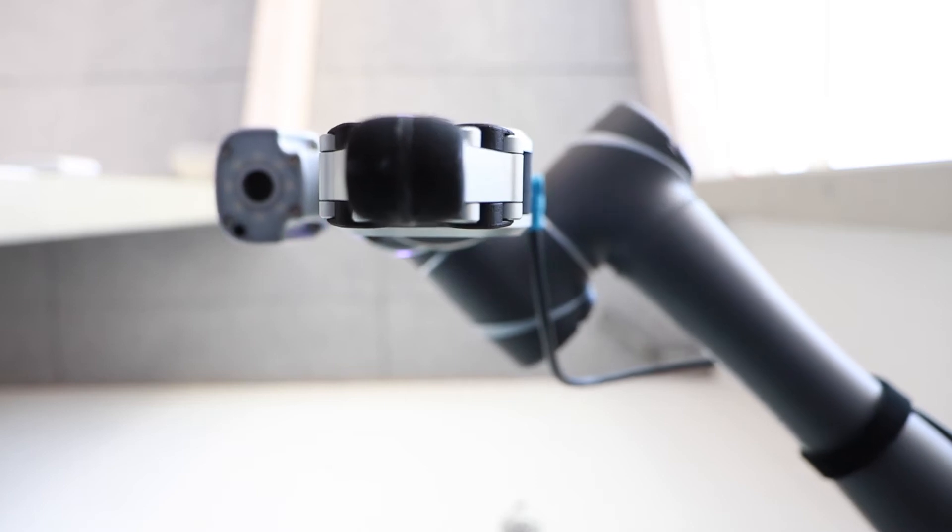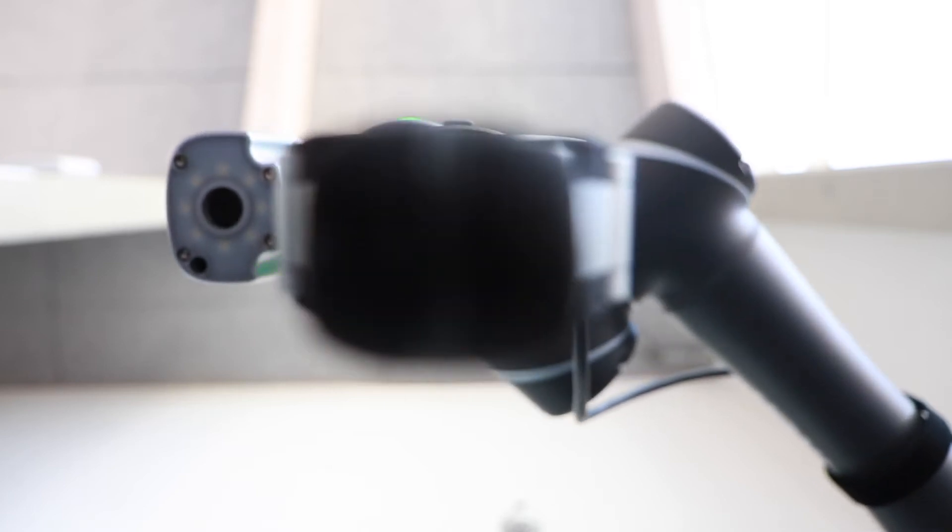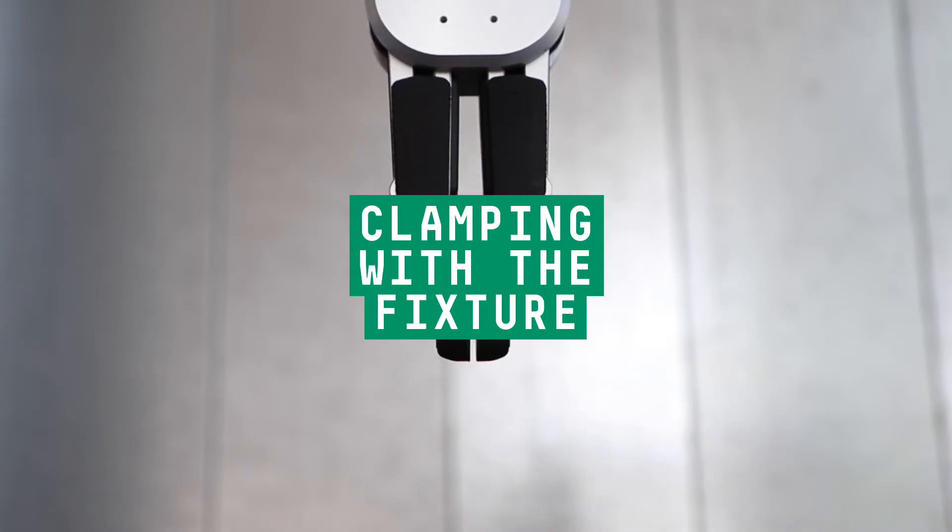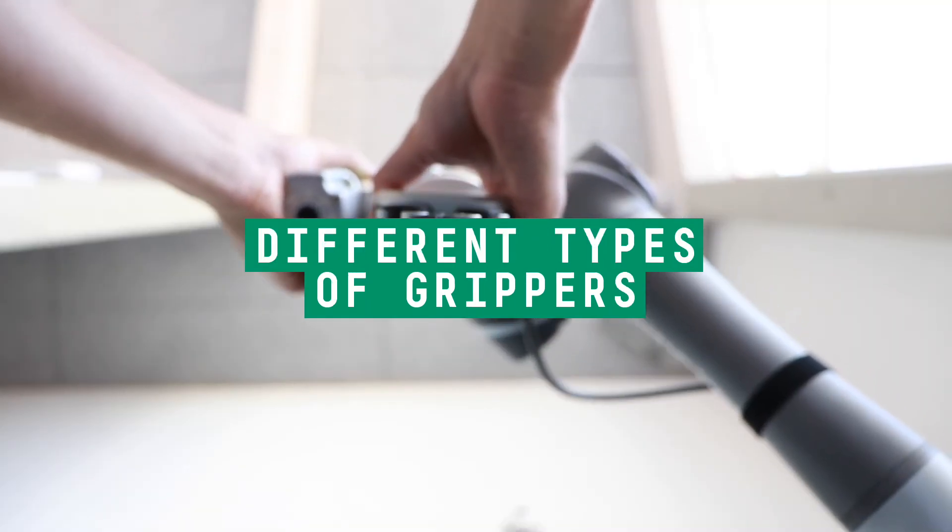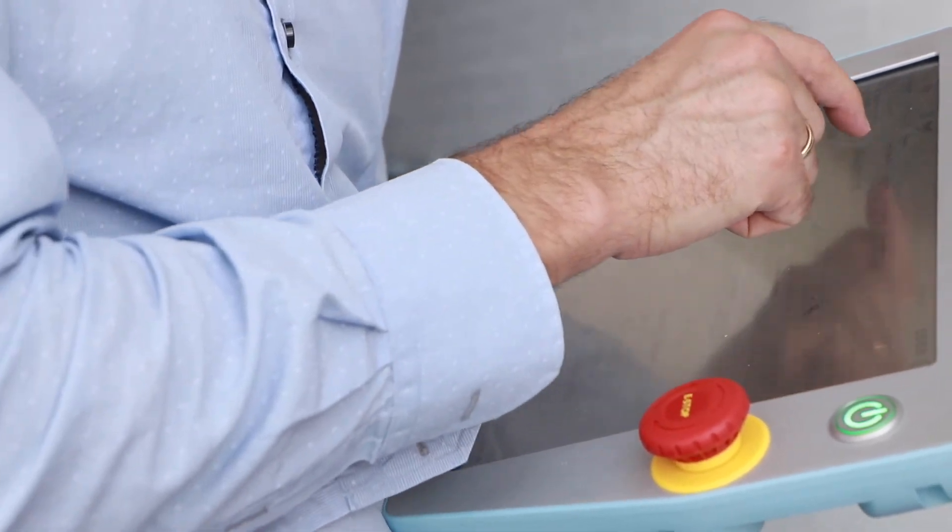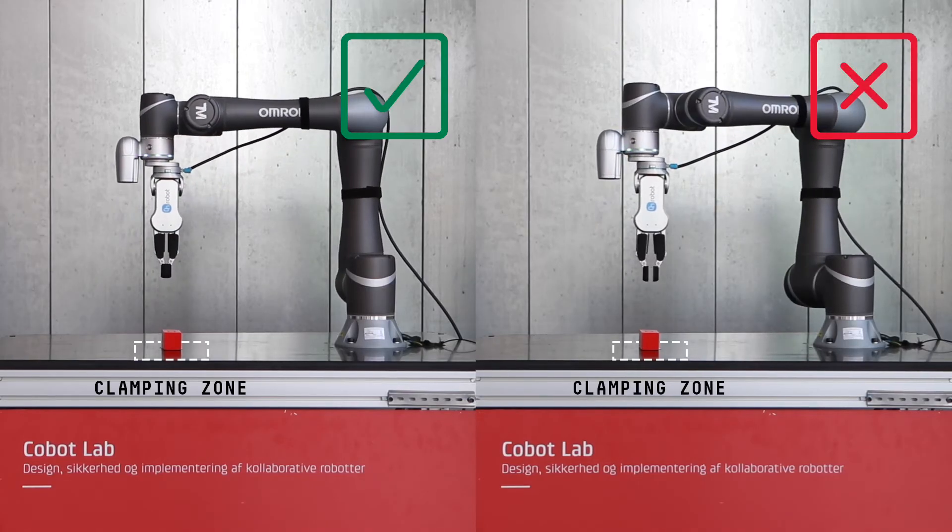There are several hazards to consider when integrating a gripper though. Clamping with the fixture, clamping inside the gripper, and different types of grippers are all things that the technician must take into account to minimize the risk of injury.